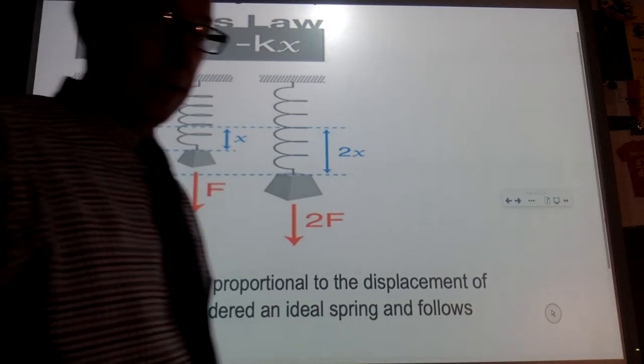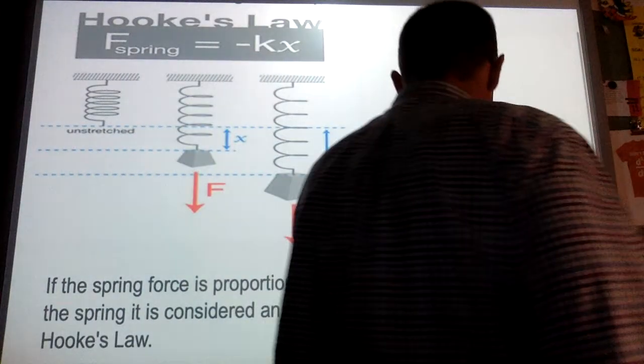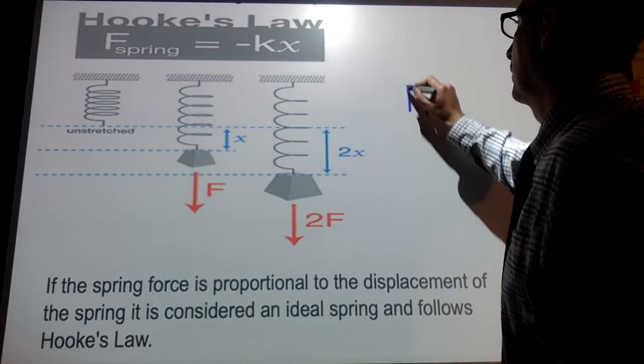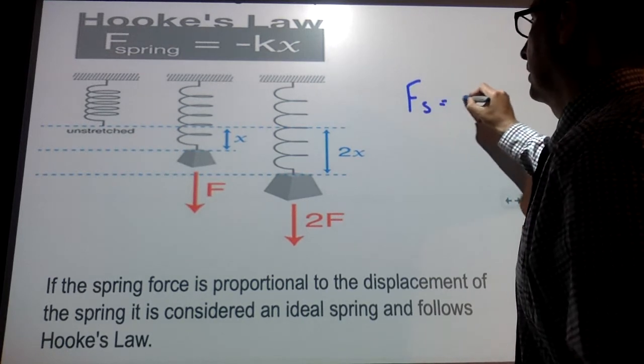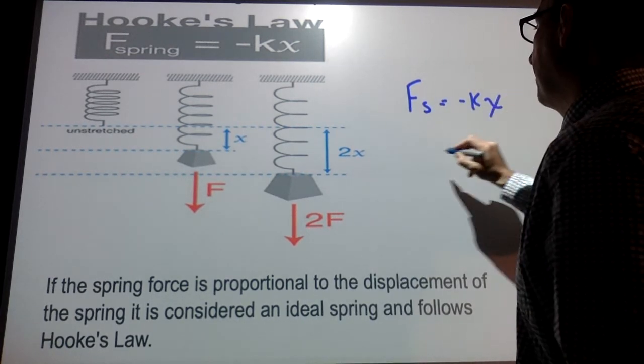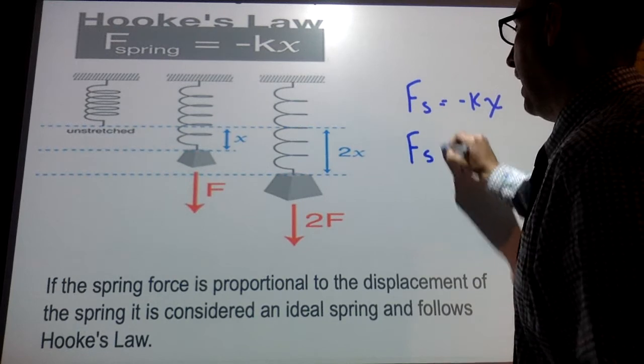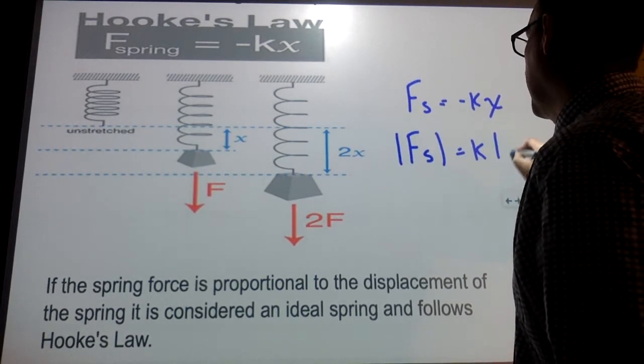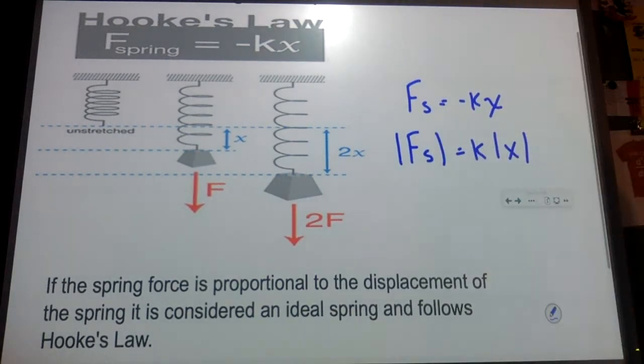So this is given two ways. You can either say that F_s, which is the spring force, is equal to negative Kx, or you could say that the absolute value of F_s is equal to K times the absolute value of x. Both of these are acceptable.